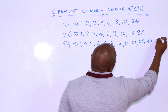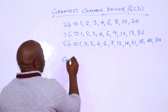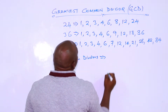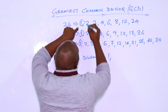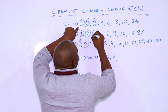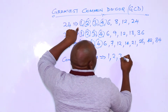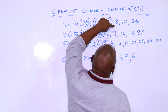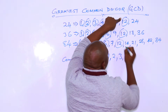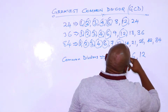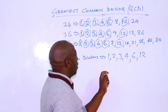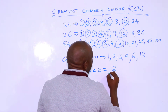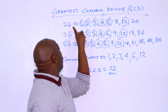So the common divisors are: 1 is common, 2 is common, 3 is common, 4 is common, 6 is common, 8 is not common, 12 is common, 24 is not common. So these are the common divisors of the three terms, and the greatest common divisor — the GCD of 24, 36, and 84 — is 12.